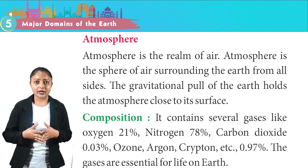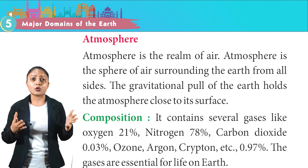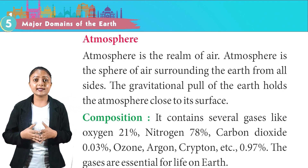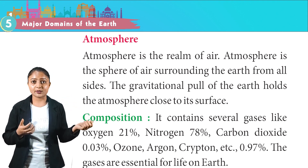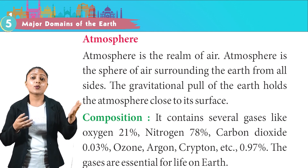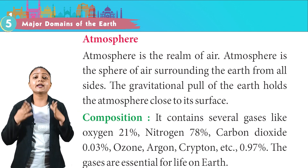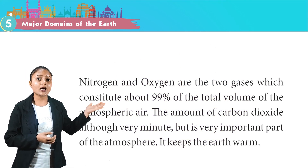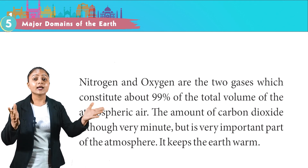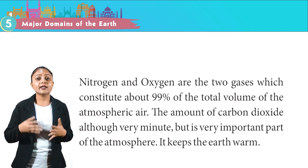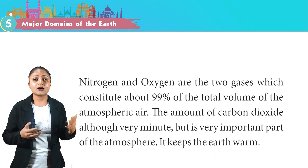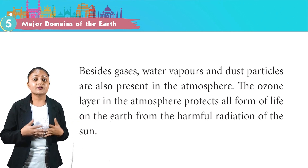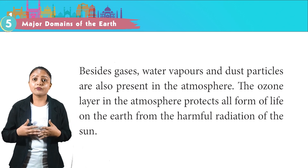Atmosphere is the realm of air — the sphere of air surrounding the earth from all sides. The gravitational pull of the earth holds the atmosphere close to its surface. It contains several gases: oxygen 21%, nitrogen 78%, carbon dioxide 0.03%, and other gases like ozone, argon, krypton etc. making up 0.97%. Nitrogen and oxygen constitute about 99% of the total volume of atmospheric air. Carbon dioxide, although very small in amount, keeps the earth warm. Water vapours and dust particles are also present. The ozone layer protects all forms of life on earth from the harmful radiation of the sun.